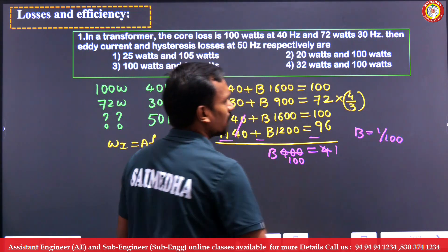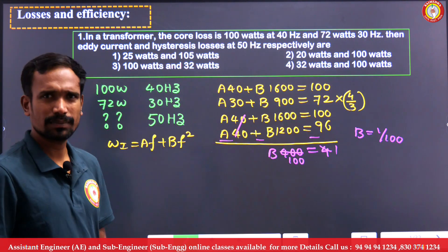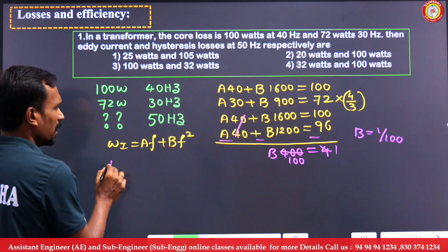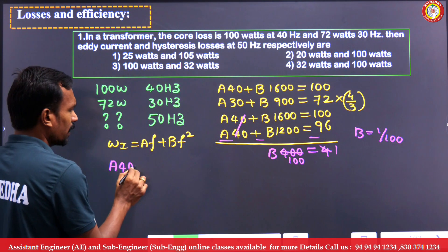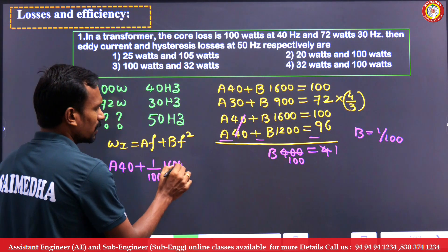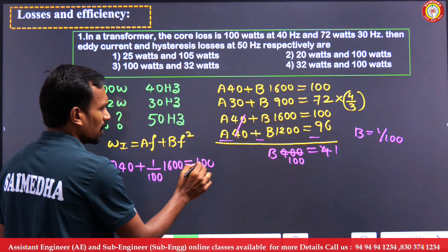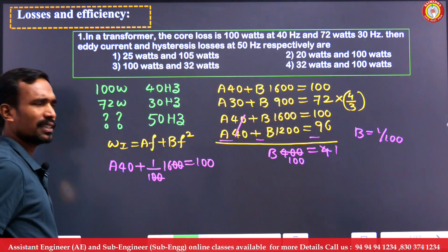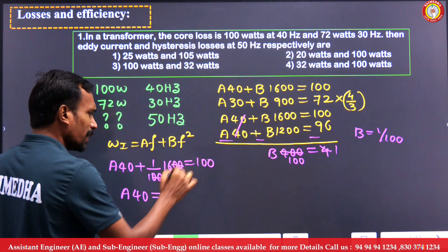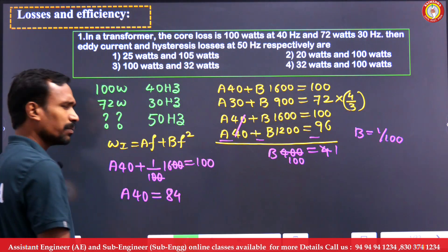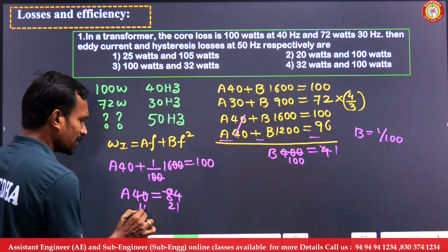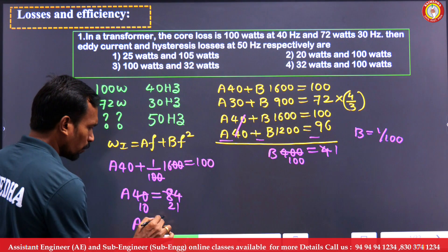Now we find the constant 'a'. Substituting b = 1/100 back into the first equation: a×40 + (1/100)×1600 = 100, so a×40 = 100 − 16 = 84, giving a = 84/40 = 21/10. So we have both constants: a = 21/10 and b = 1/100.